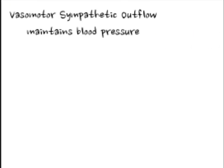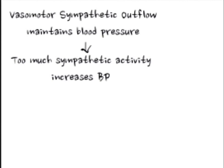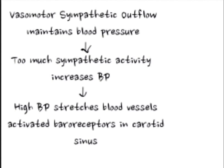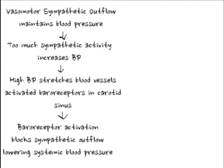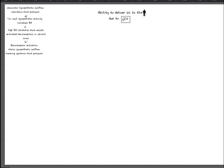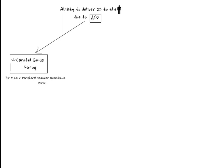In baroreceptor regulation, baseline blood pressure is determined by constant sympathetic vasomotor stimulation by norepinephrine, which activates sympathetic alpha and beta receptors to maintain blood pressure. A high blood pressure stretches the blood vessel walls, activating baroreceptors in the carotid sinus, which blocks sympathetic outflow, thereby lowering systemic blood pressure. But in heart failure, decreased cardiac output decreases blood pressure, preventing stretching of vessel walls and decreasing baroreceptor activation, resulting in basically unblocked sympathetic norepinephrine outflow.